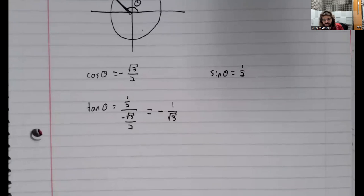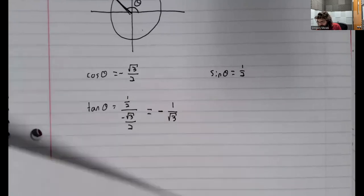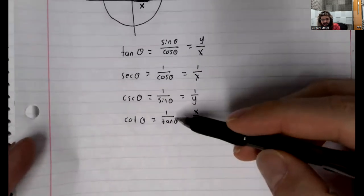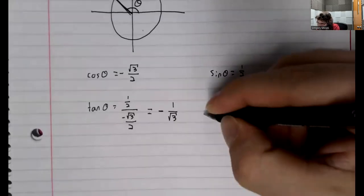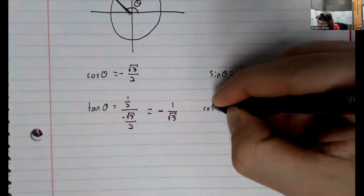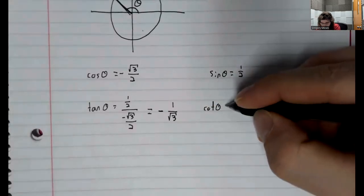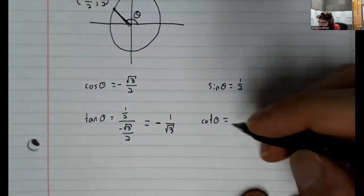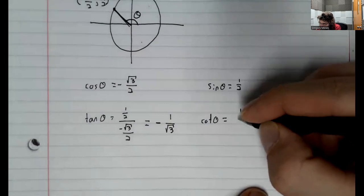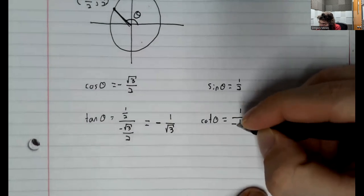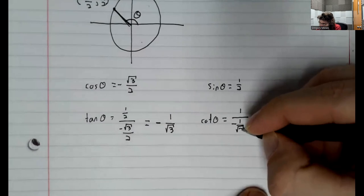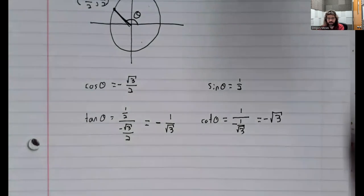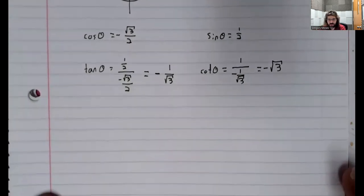Since we've found the tangent, maybe the cotangent is the next thing to find. The cotangent. We could think of it as x over y, but we could also think of it as 1 over the tangent. Or negative the square root of 3.